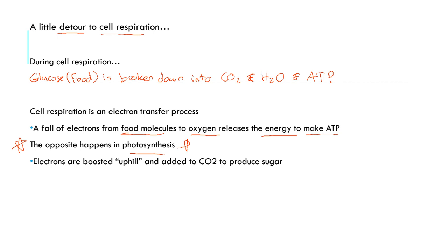Electrons are boosted uphill and added to carbon dioxide. And this is what you have to remember. The electrons, once they have all this energy, they're going to pass this energy and boost it uphill. They're going to be added to carbon dioxide to produce sugar. The sugar will be glucose, and that's how we end up with glucose.